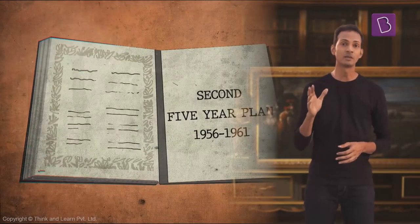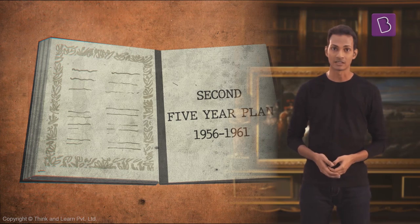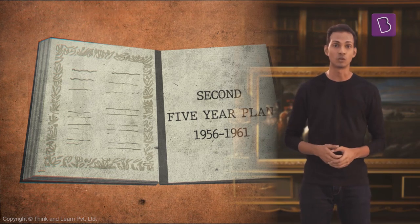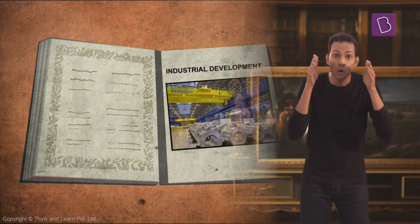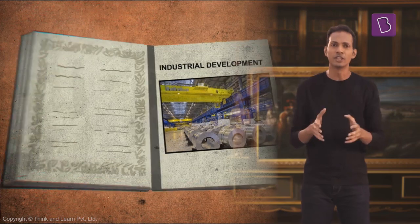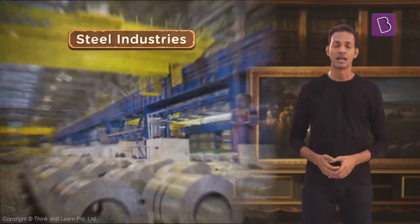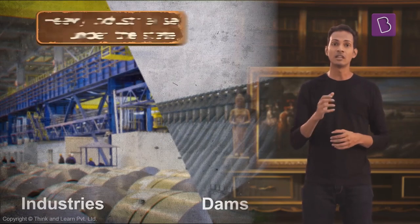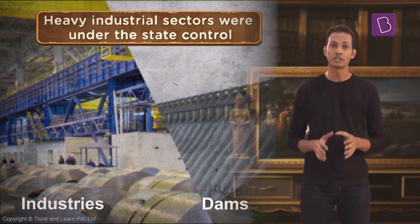The second five-year plan was formulated in 1956 for the five years between 1956 and 1961. Its main focus was industrial development. This plan focused on steel industries and on the building of large dams. Heavy industrial sectors were under the control of the state.